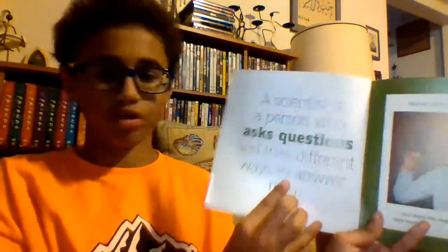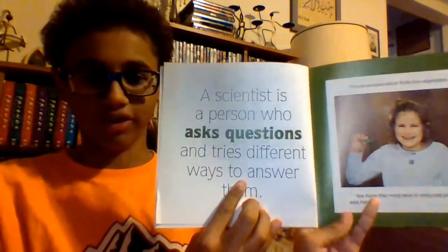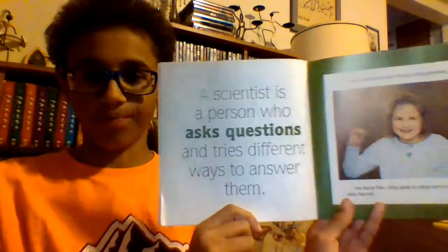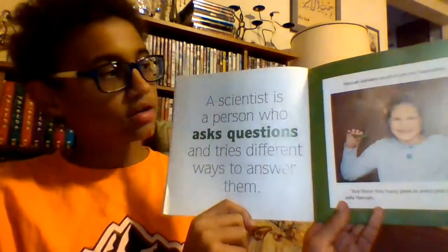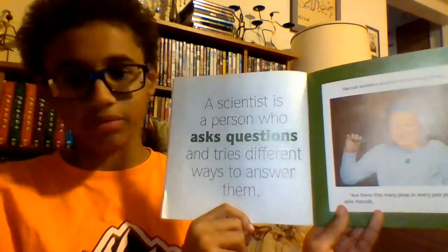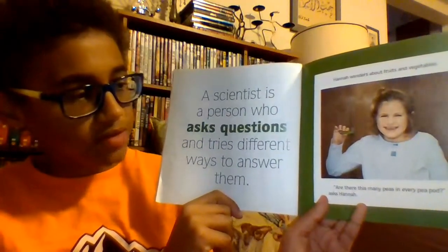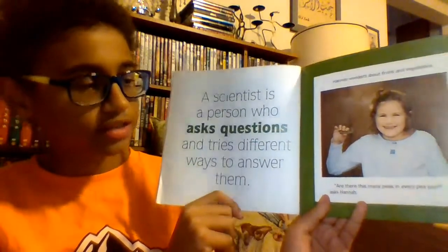What is a Scientist? By Barbara Lenn. A scientist is a person who asks questions and tries different ways to answer them. Hannah wonders about the fruits and vegetables. 'Are there this many peas in every pea pod?' asks Hannah.